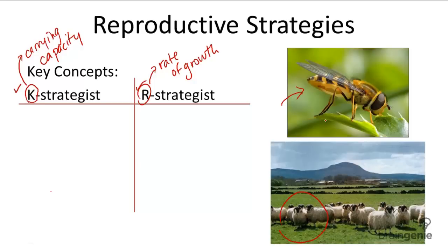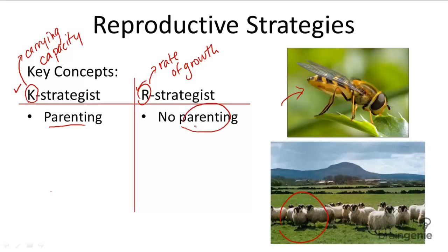The main difference between K-strategists and R-strategists reproductive-wise is that K-strategists have intensive parenting, whereas R-strategists don't have much parenting at all. This difference in parenting styles leads to all the other differences between these two reproductive strategists.